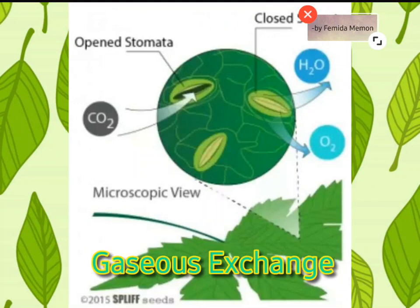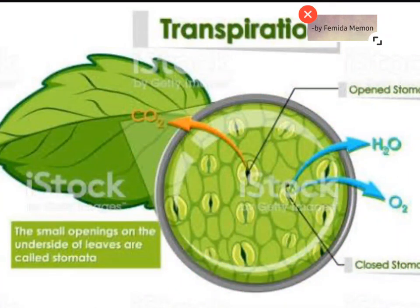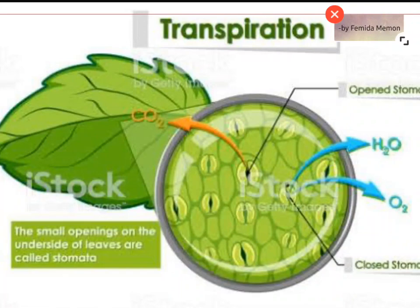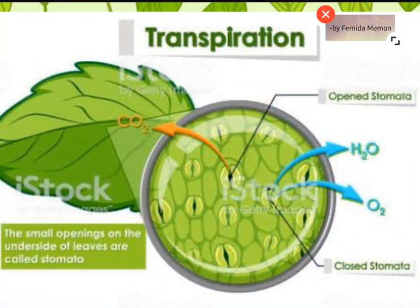Gaseous exchange: Stomata are minute openings present mostly on the lower surface of the leaves. These openings are surrounded by guard cells. The stomata help in the exchange of oxygen and carbon dioxide during respiration. Number three, transpiration: plants lose water in the form of water vapor through the stomata. This gives a cooling effect to the plant body, and more transpiration takes place through the lower surface of the leaves.